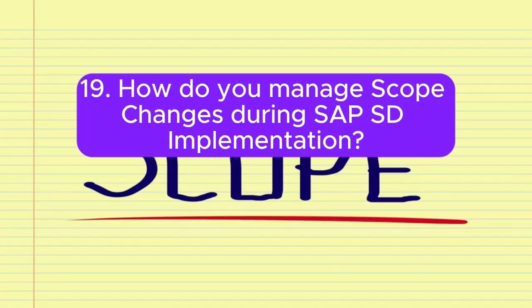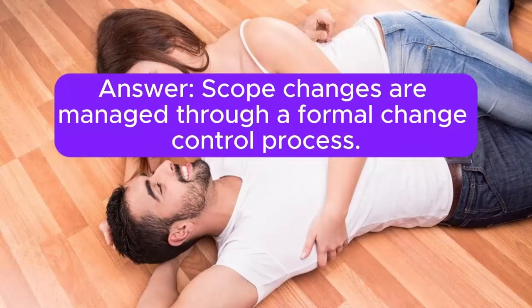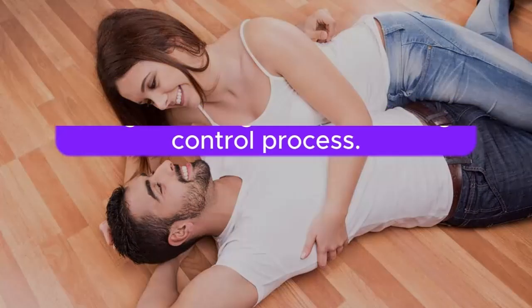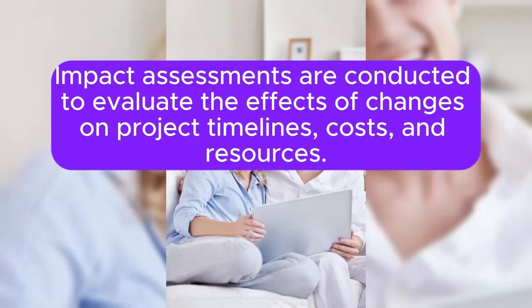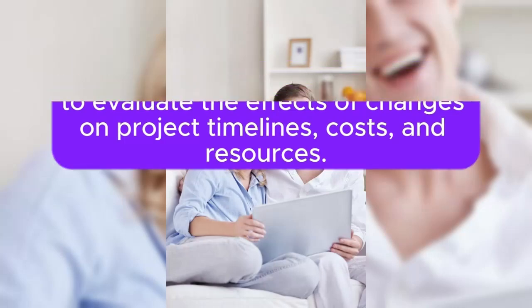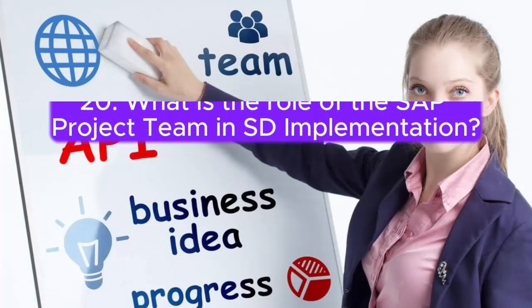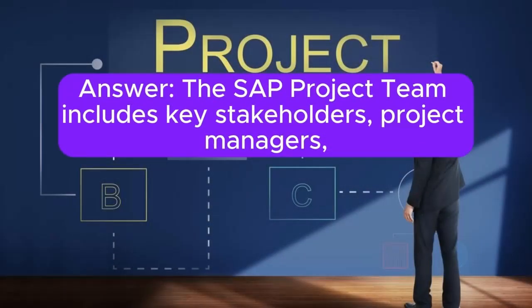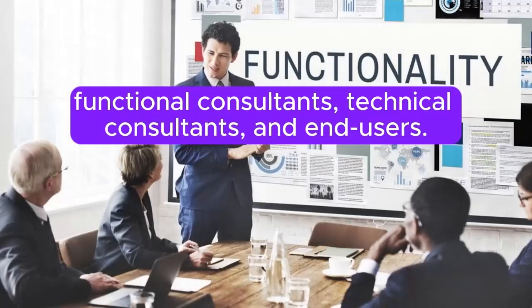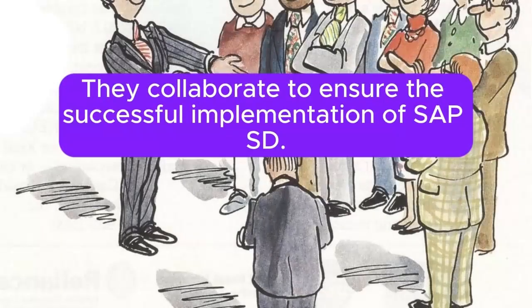Question 19: How do you manage scope changes during SAP SD implementation? Answer: Scope changes are managed through a formal change control process. Impact assessments are conducted to evaluate the effects of changes on project timelines, costs, and resources. Question 20: What is the role of the SAP project team in SD implementation? Answer: The SAP project team includes key stakeholders, project managers, functional consultants, technical consultants, and end-users. They collaborate to ensure the successful implementation of SAP SD.